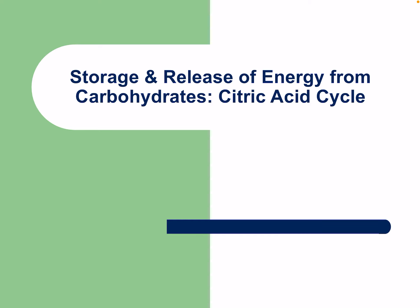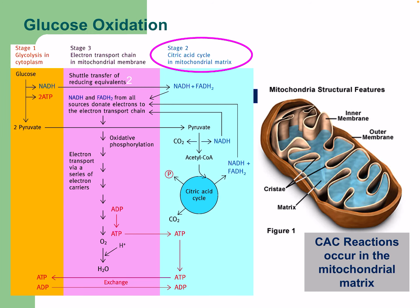Hello everyone, today we'll be looking at part one of the citric acid cycle — the storage and release of energy from carbohydrates. Stage two in oxidative metabolism is the citric acid cycle, which occurs in the mitochondrial matrix. At a big-picture level, we can see the cycle where we have some CO2, some phosphate, NAD+, and FADH.